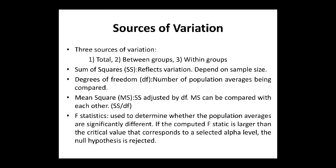Three sources of variation exist in ANOVA: first is total variation, second is between-groups variation, and third is within-groups variation. Sum of squares reflects variation depending on the sample size. Degree of freedom is the number of population averages being compared. Mean sum of squares, denoted MS or MSS, is the sum of squares adjusted by the degree of freedom — when we divide sum of squares by degree of freedom, we get the mean sum of squares.